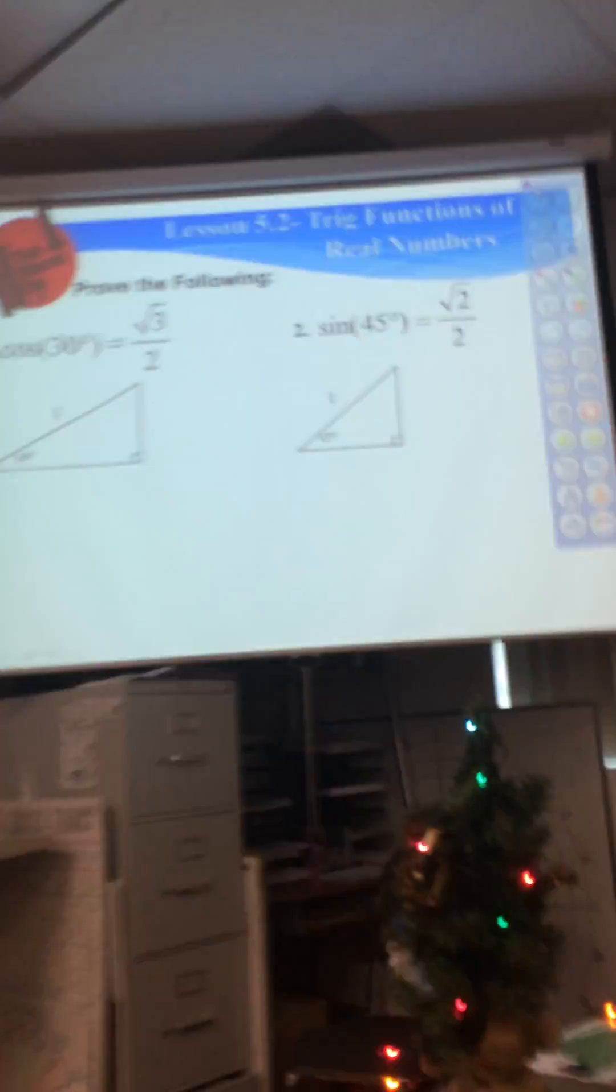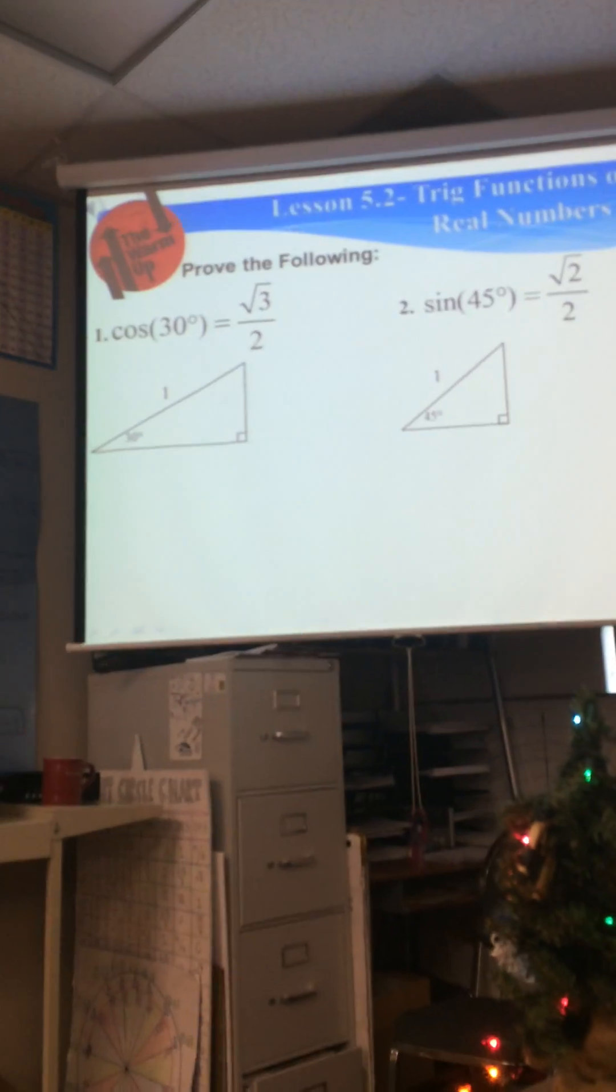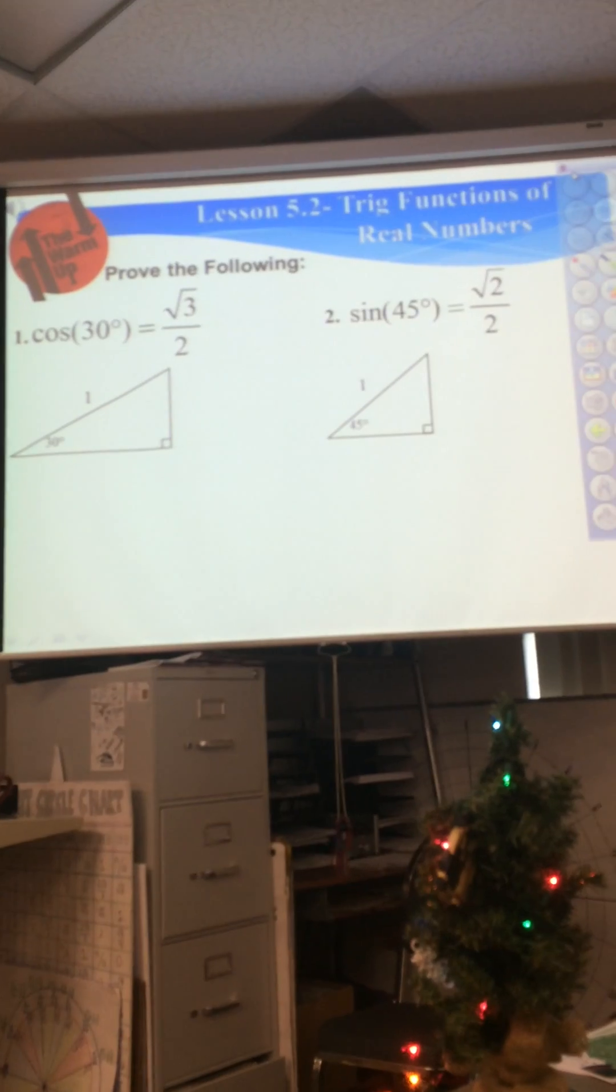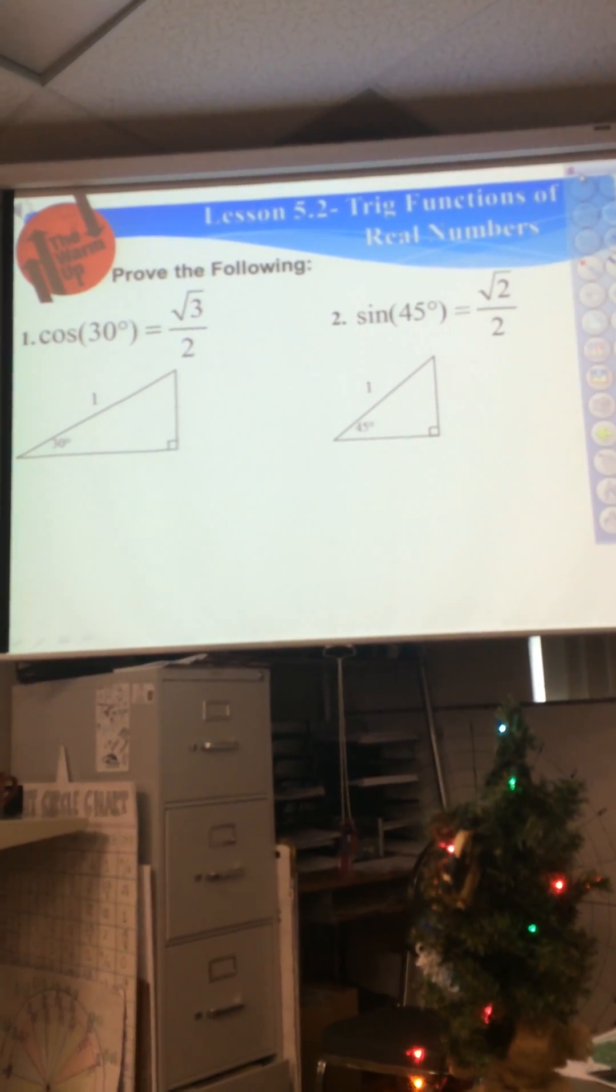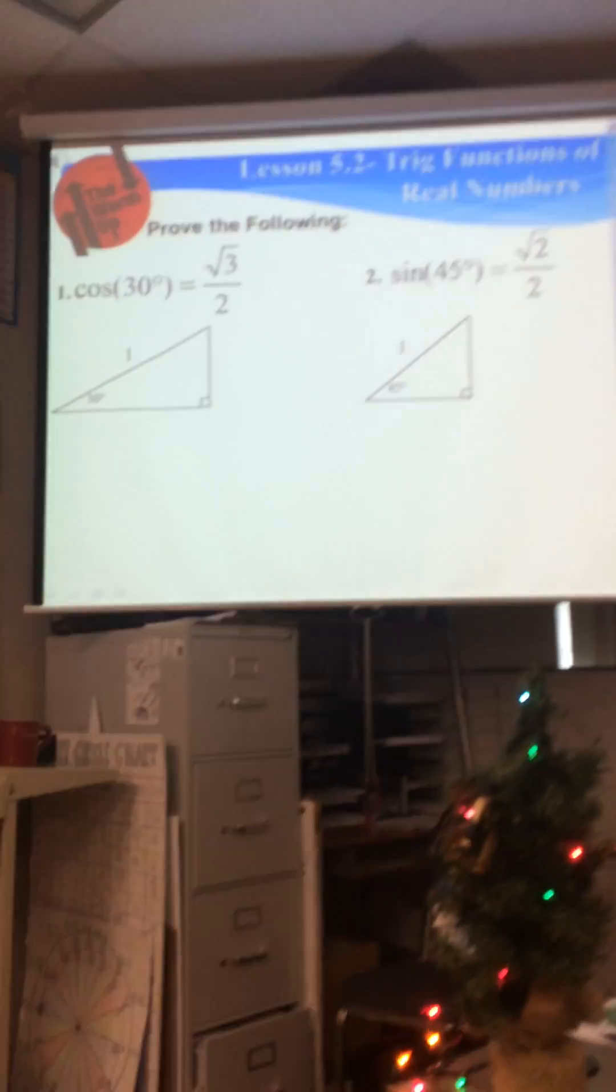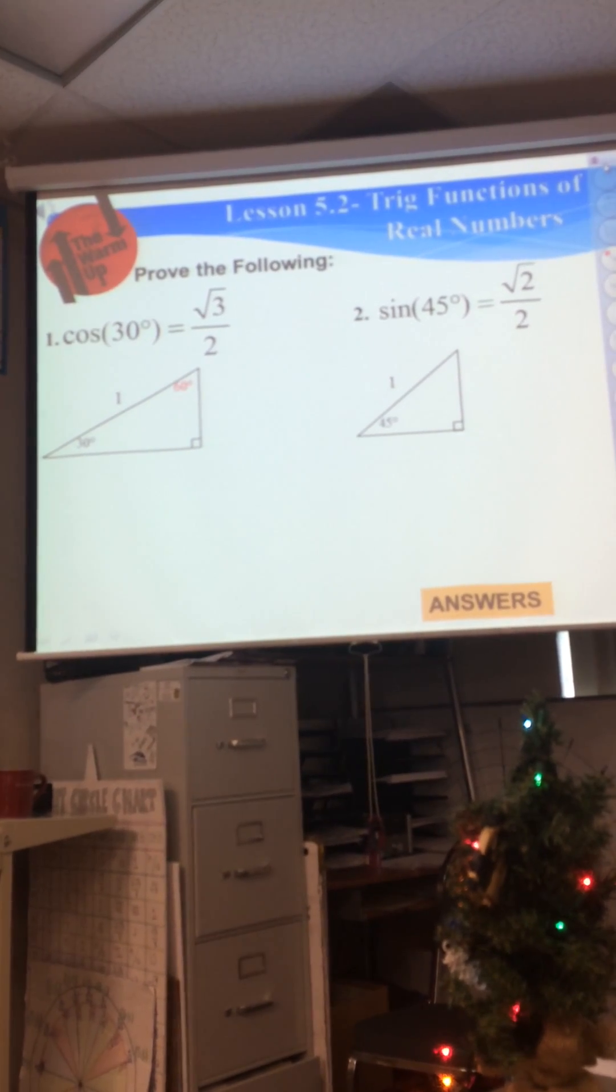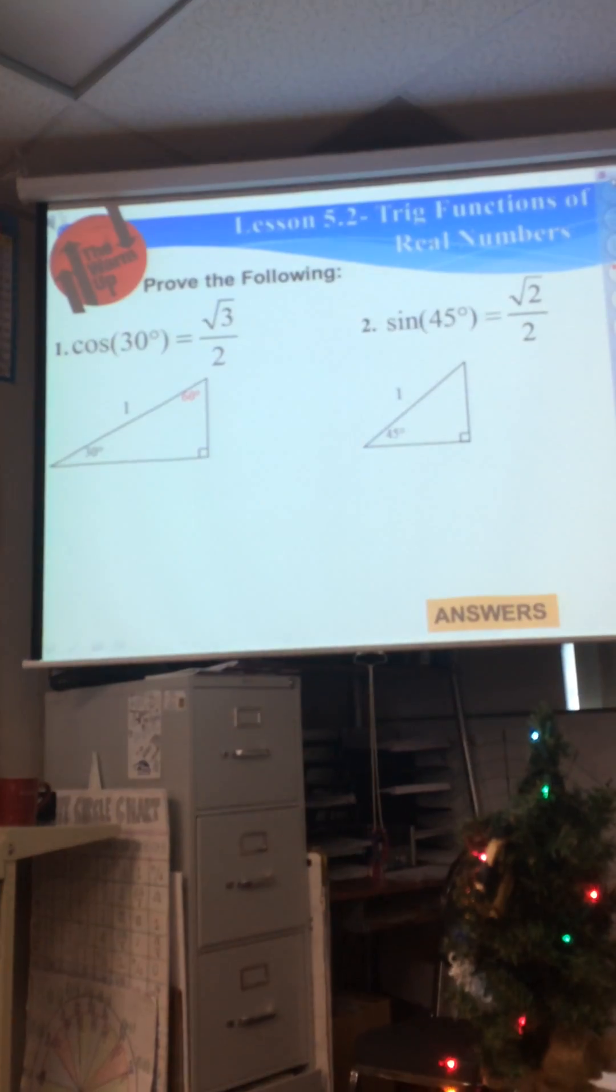All right, listen up. Cosine 30 degrees equals radical 3 over 2. The first thing that you need to do is just look at this triangle and say, okay, what's missing? What else can I fill out? Good, we have 60. Okay, so put the 60 right there.